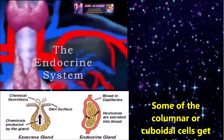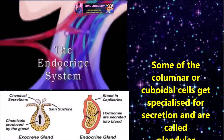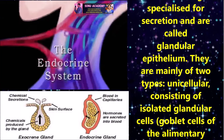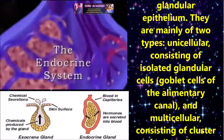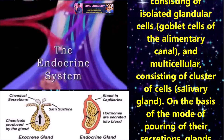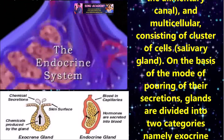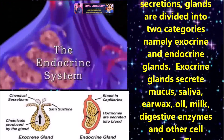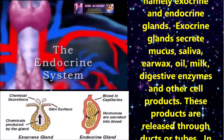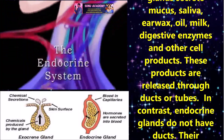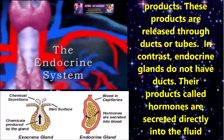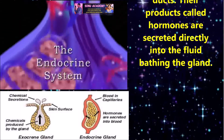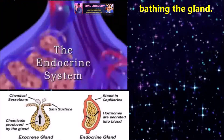Some of the columnar or cuboidal cells get specialized for secretion and are called glandular epithelium. They are mainly of two types: unicellular, consisting of isolated glandular cells, and multicellular, consisting of clusters of cells like salivary glands. On the basis of the mode of pouring of their secretion, glands are divided into two categories: exocrine and endocrine glands. Exocrine glands secrete mucus, saliva, earwax, oil, milk, digestive enzymes and other cell products through ducts or tubes. Endocrine glands do not have ducts; their products called hormones are secreted directly into the fluid surrounding the gland.